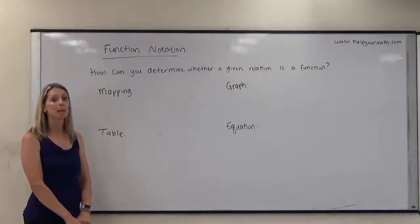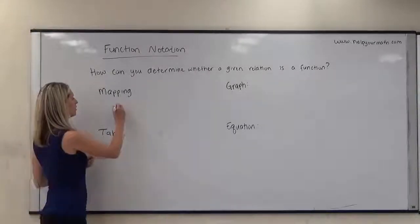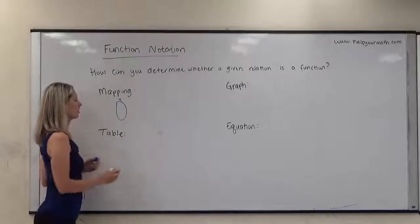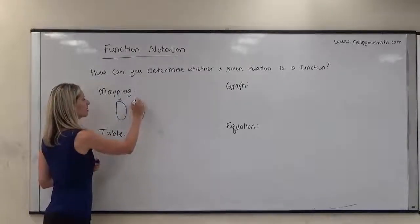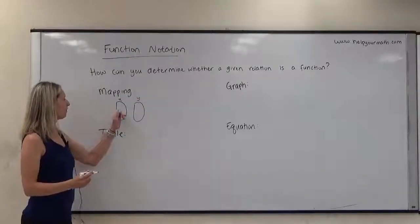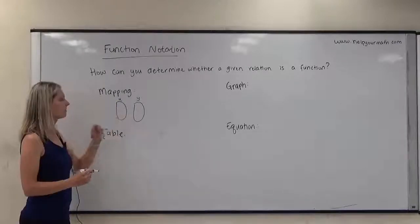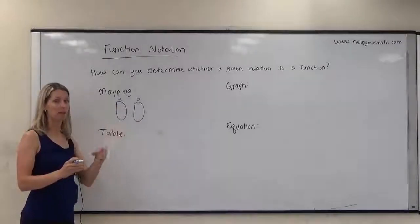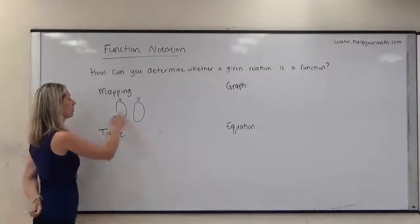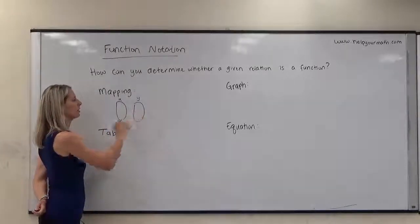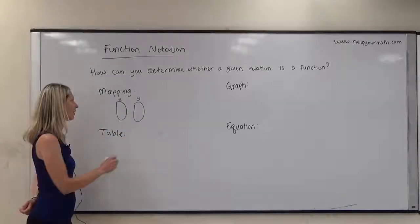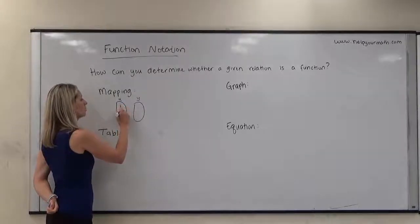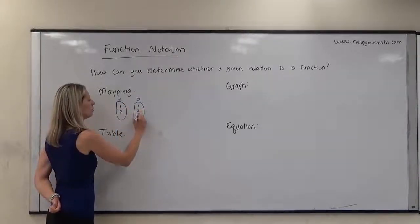The first way is a mapping. A mapping is when you set up two ovals, where the first one is your input — we label it X — and the second one is your output, which we label Y. We put all of the input values, called the domain, in the first oval, and the set of outputs, called the range, in the second. So the domain could be one and two, and the range could be one, two, three.